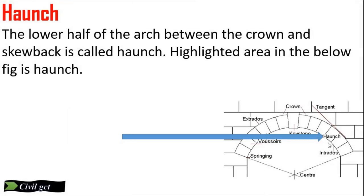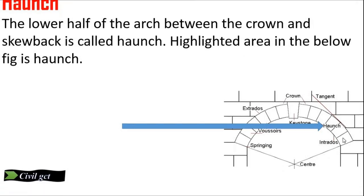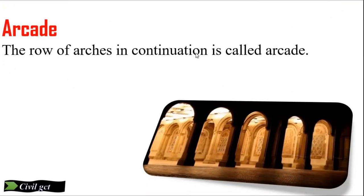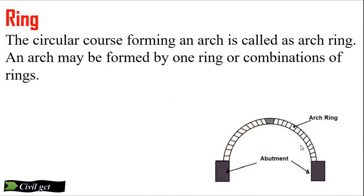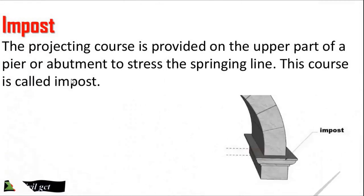Springer: the first voussoir at the springing level, which is immediately adjacent to the skewback, is called the springer. Haunch: the lower half of the arch between the crown and the skewback is called the haunch — the highlighted area in the figure is the haunch. Arcade: the row of arches in continuation is called an arcade. Ring: the circular course forming an arch is called a ring, and an arch may be formed by one ring or a combination of rings.